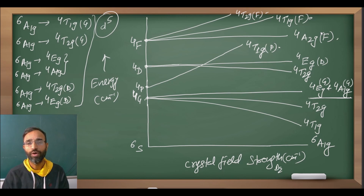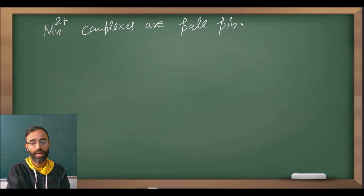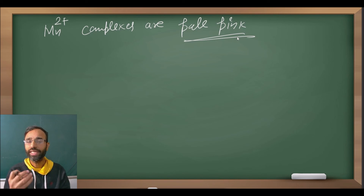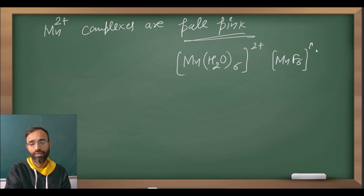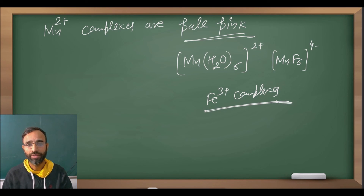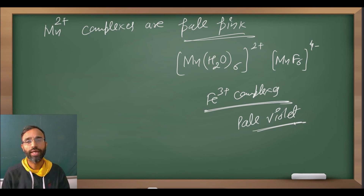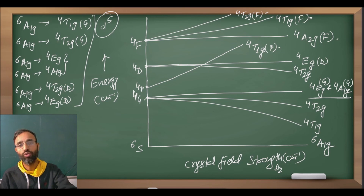This is the Orgel diagram for D5 configuration. Because of these spin-forbidden transitions, most Mn²⁺ complexes are pale pink because their d-d transition is not spin-allowed. Similarly, high-spin complexes like [Mn(H₂O)₆]²⁺, [MnF₆]⁴⁻, and even Fe³⁺ complexes are very pale in color, since only spin-forbidden transitions are possible when they are attached to weak-field ligands.